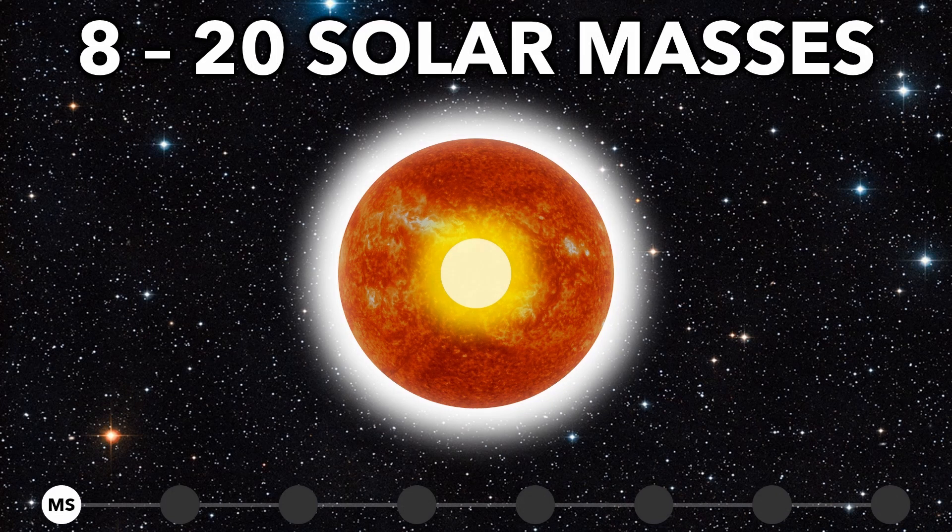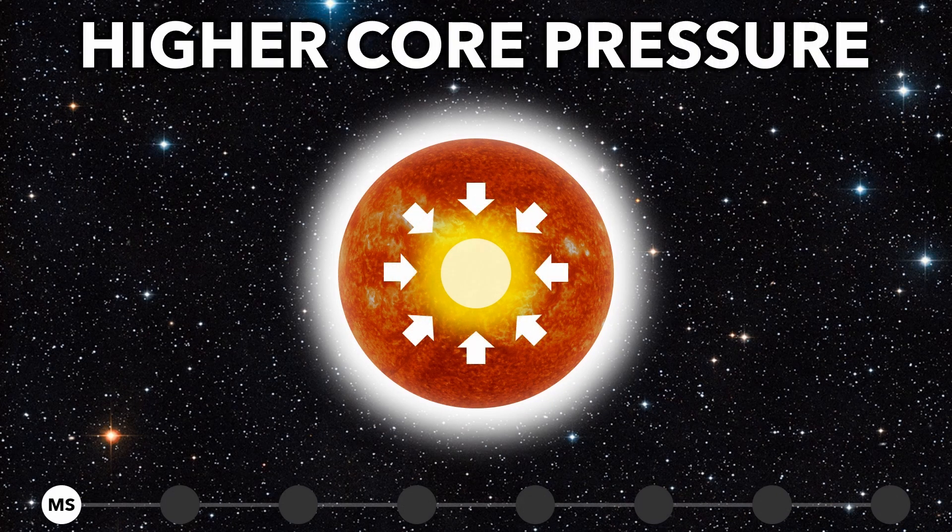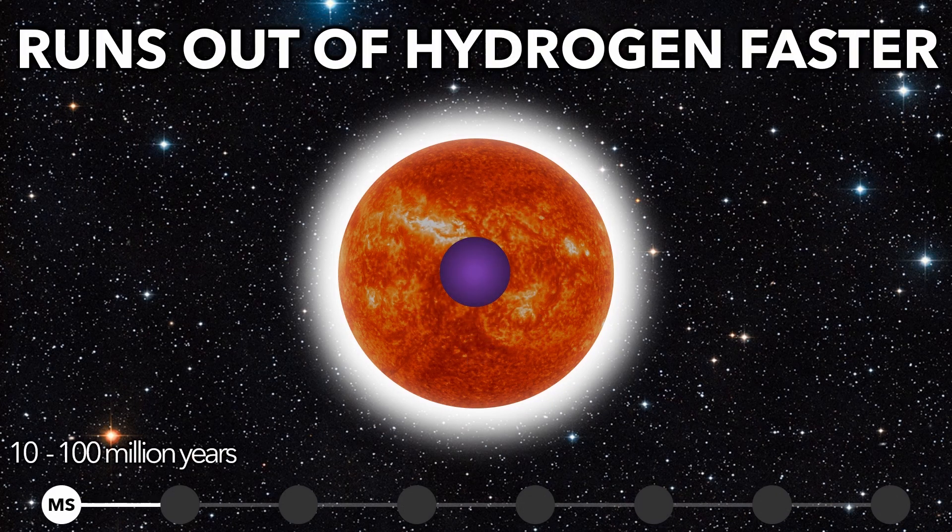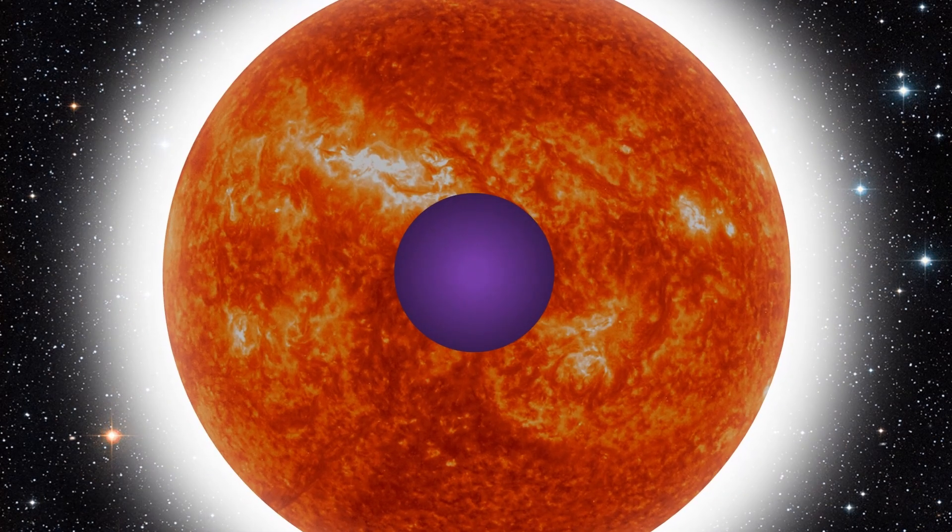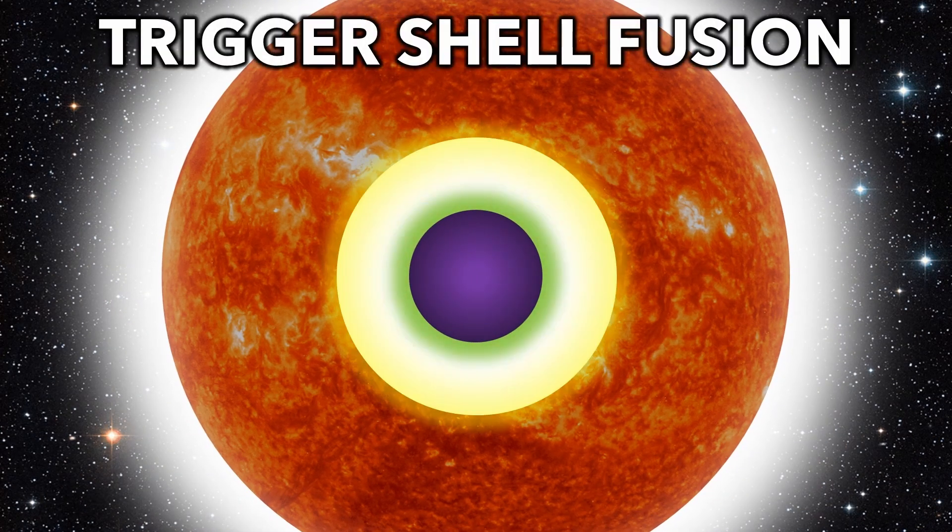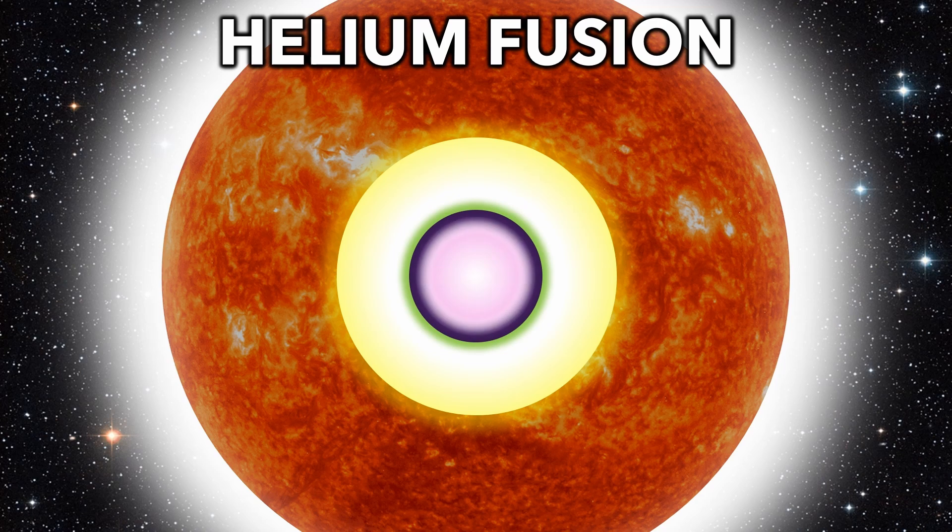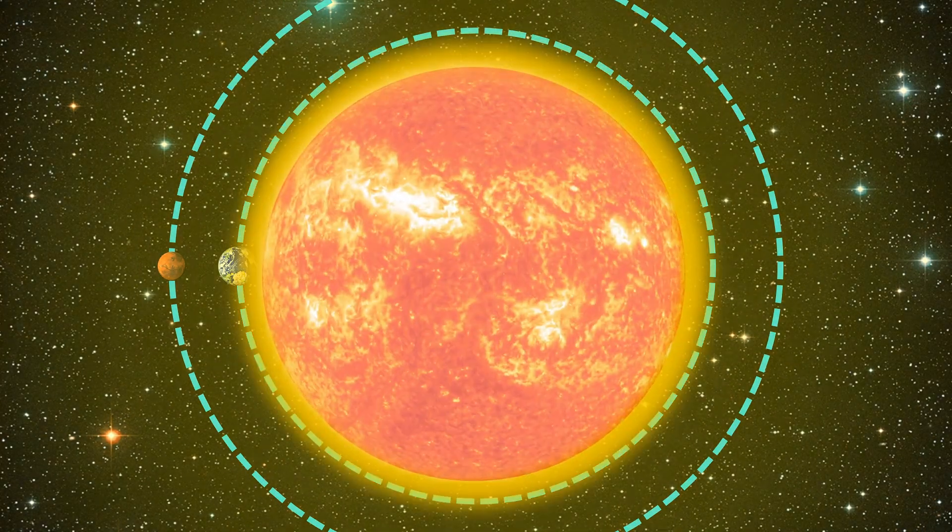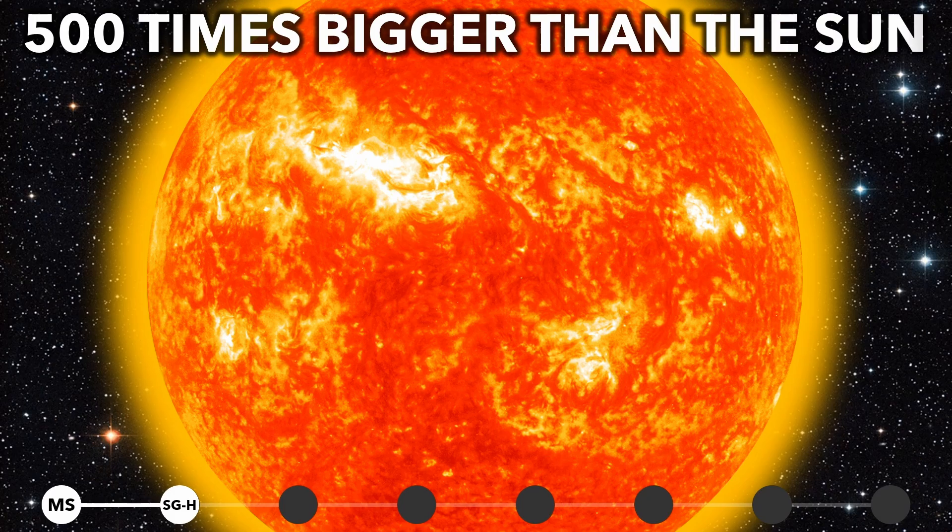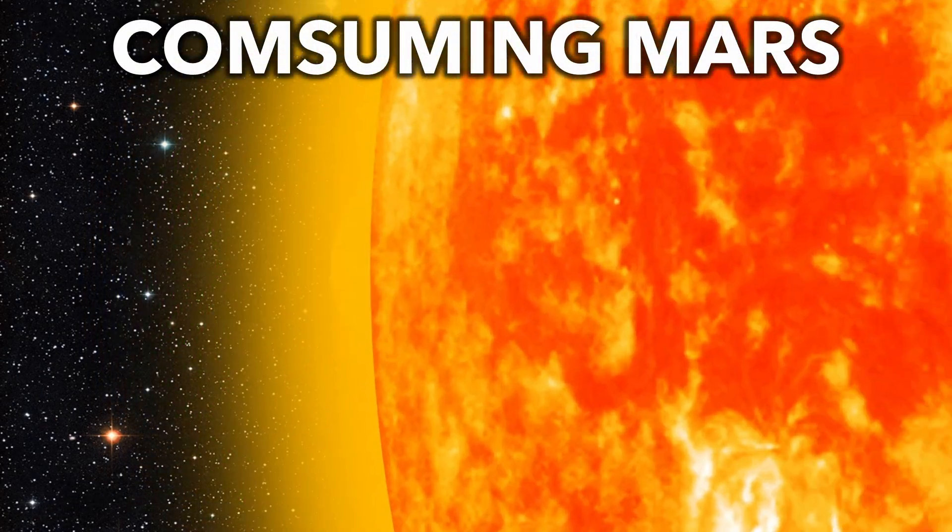Now let's look at medium mass stars. Higher core pressures mean heavier stars fuse their hydrogen into helium much faster. Like before, the helium core collapses, triggering shell fusion, and eventually starts fusing helium. The star now expands into a helium burning supergiant. At 500 times bigger than the Sun, it would even consume Mars.